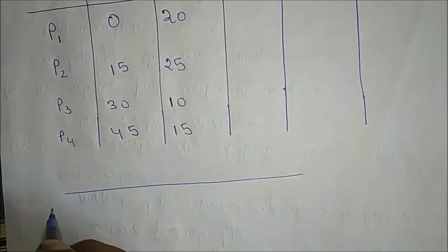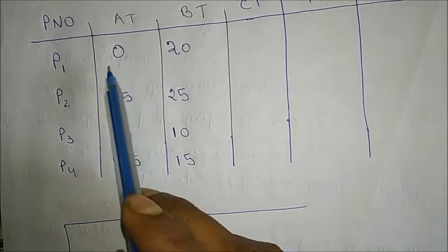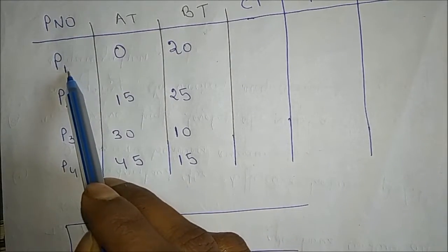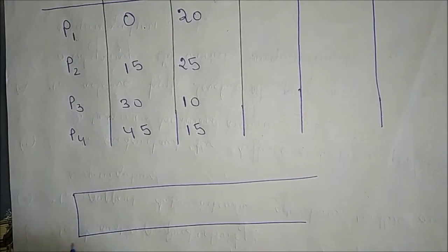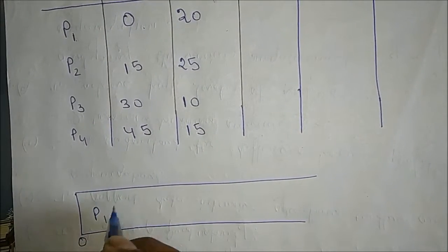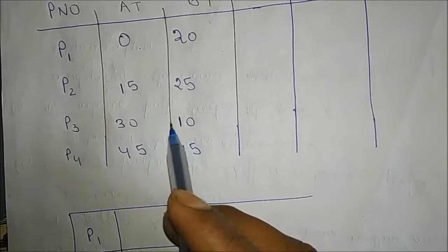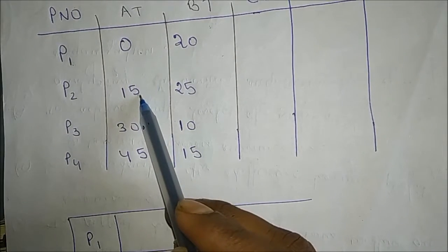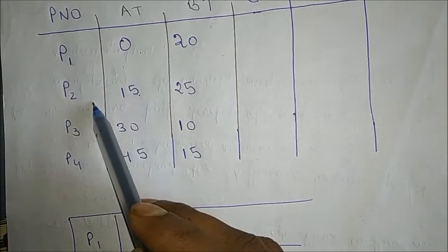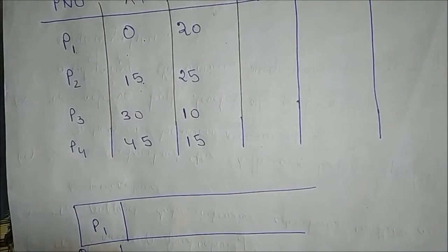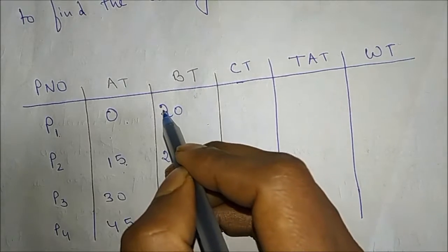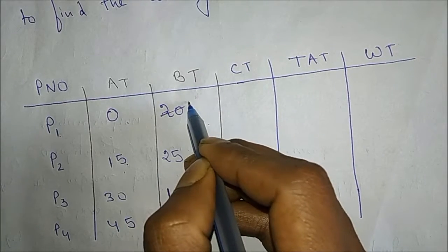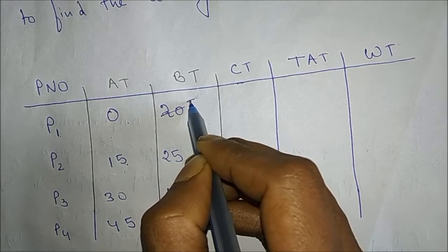For the Gantt chart, since it is Shortest Remaining Time First, P1 arrives first with arrival time 0. P1 starts at 0 and runs until the next arrival time, which is when P2 arrives at 15. So P1 runs for 15 units, leaving 5 units remaining for P1.